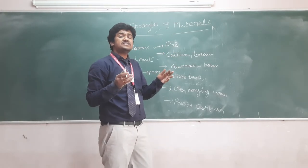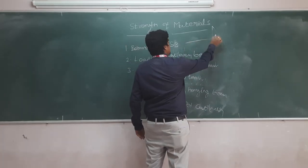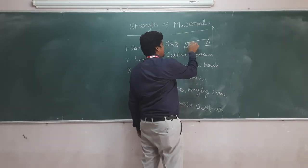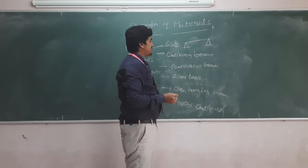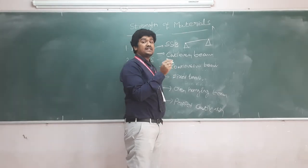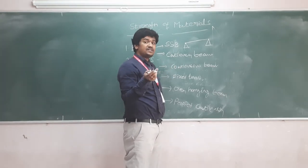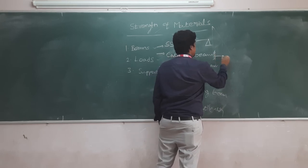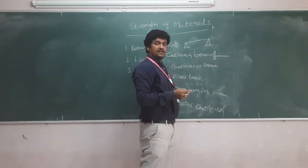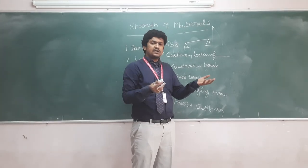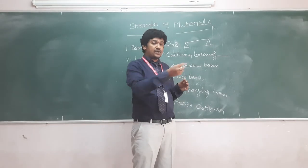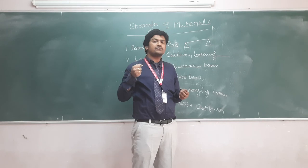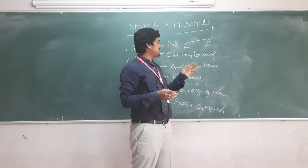Simply supported beam is a beam which is freely rested at its two ends. A cantilever beam is a beam which is fixed at one end while the other end is free. Practically in daily life, doors and windows are examples of cantilever beams — when we apply force at the free end to open or close the door, rotation takes place.